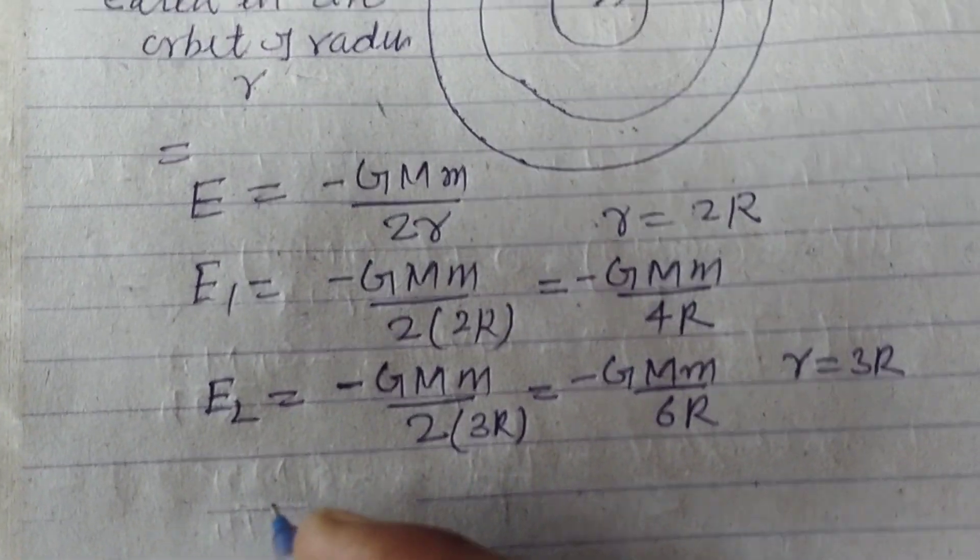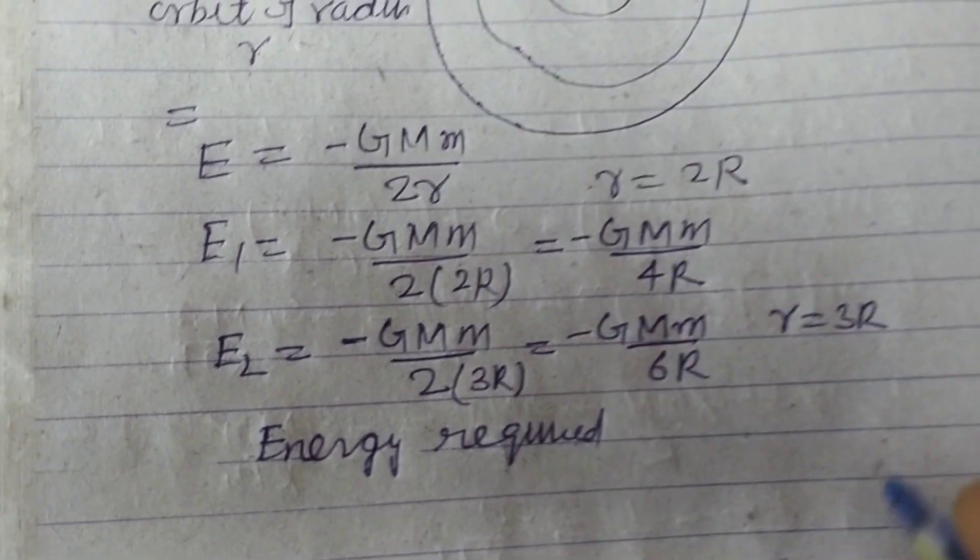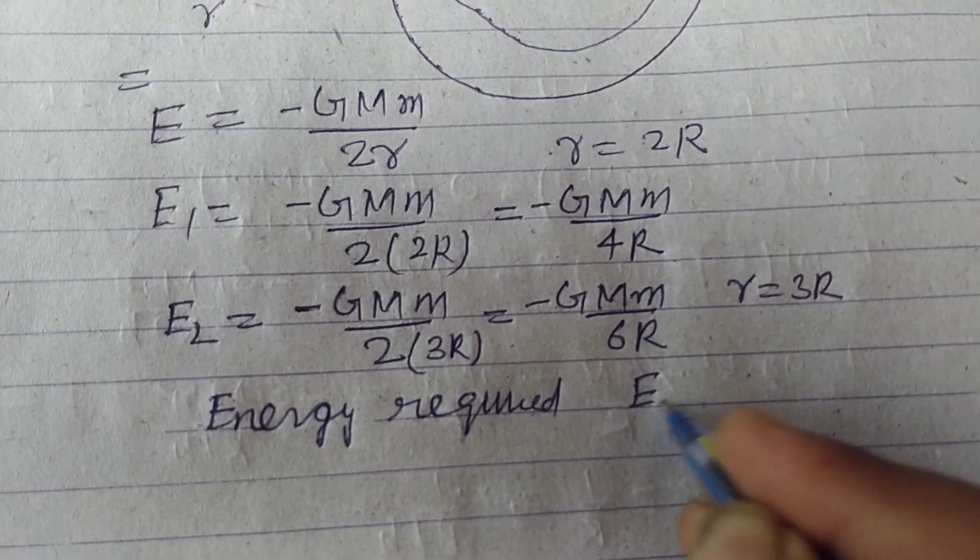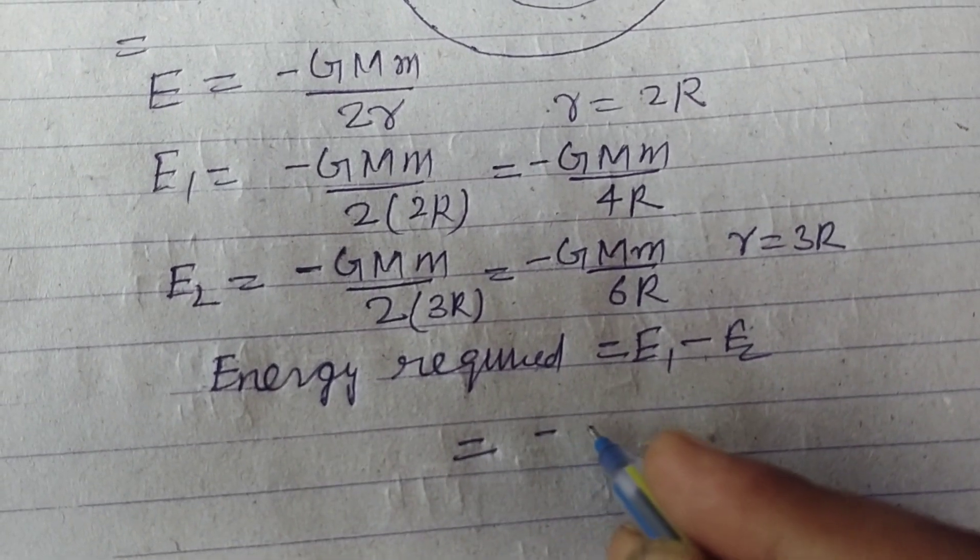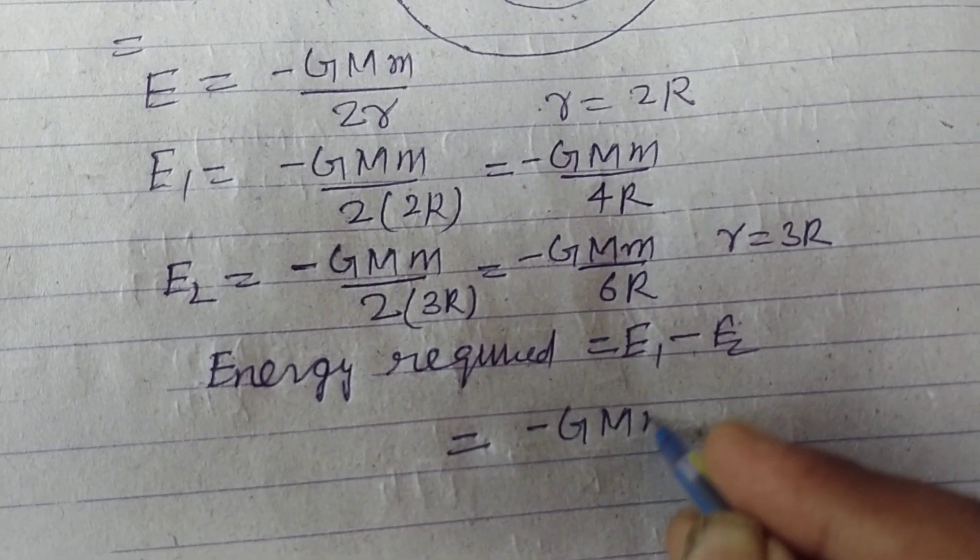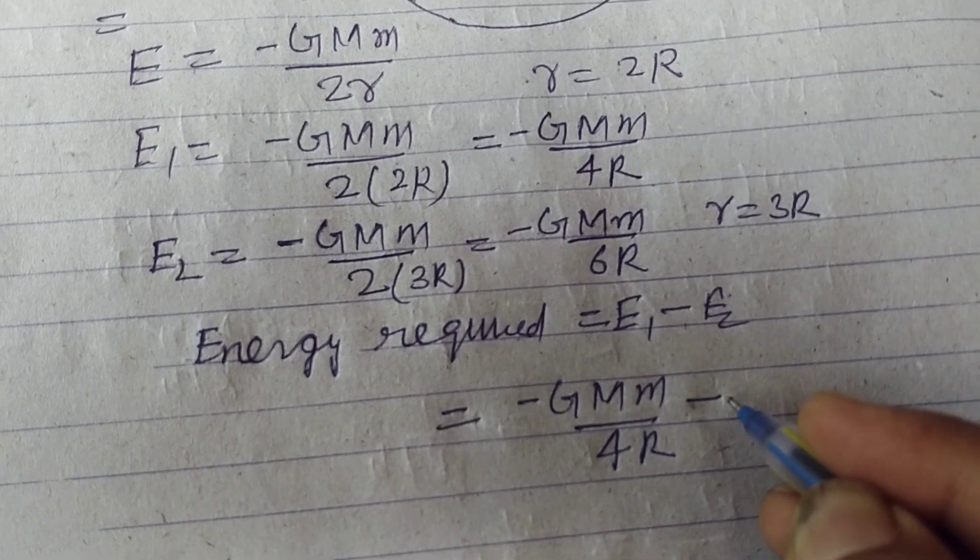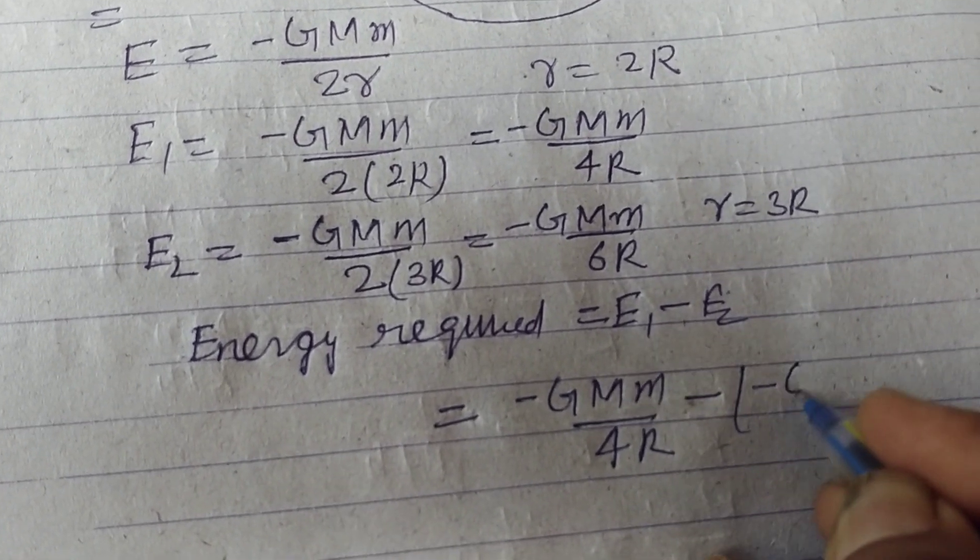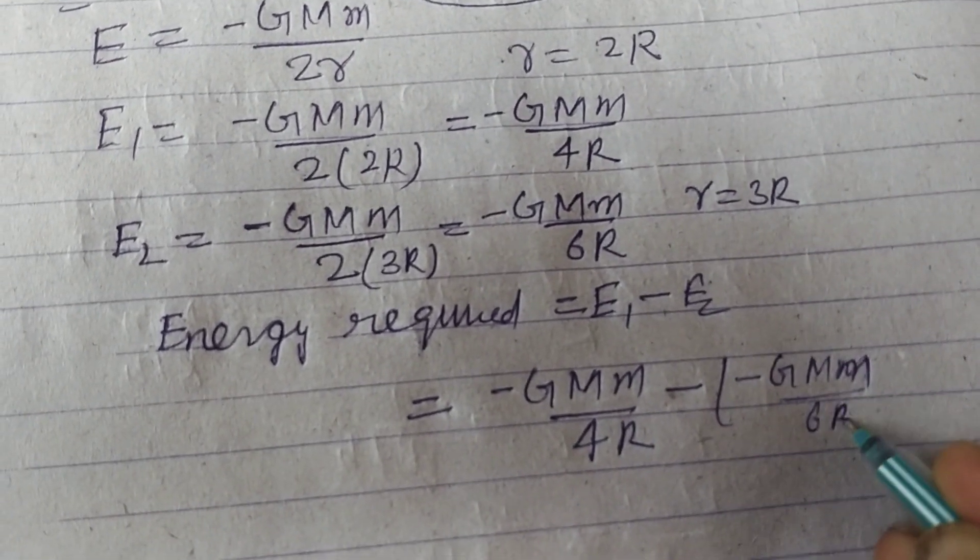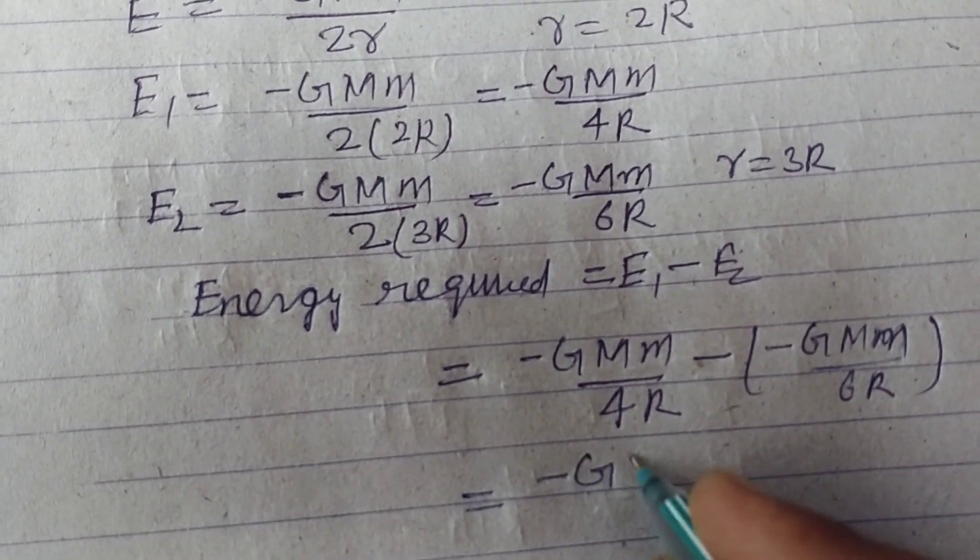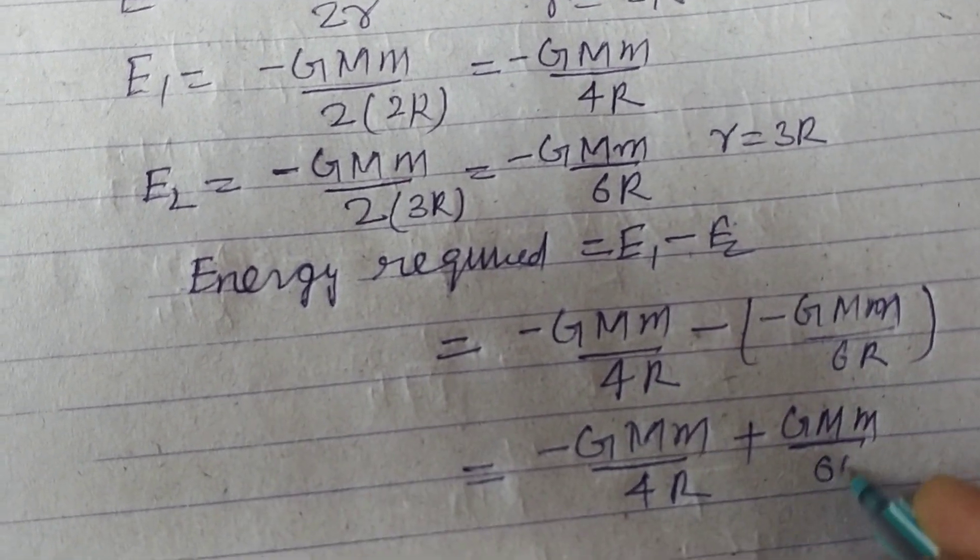Now energy required equal to E2 minus E1. So this will be minus GMm upon 6R minus, minus GMm upon 4R. So GMm upon 6R.